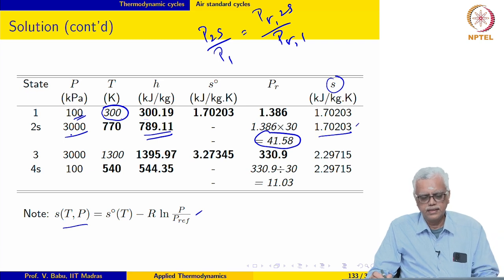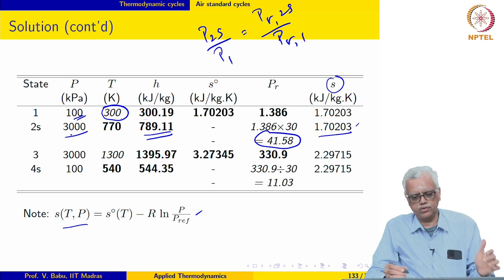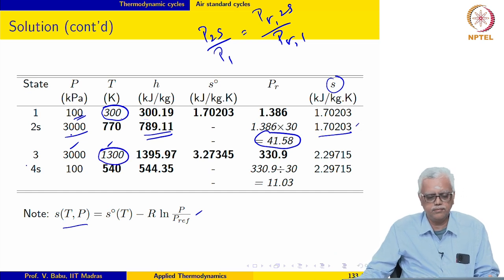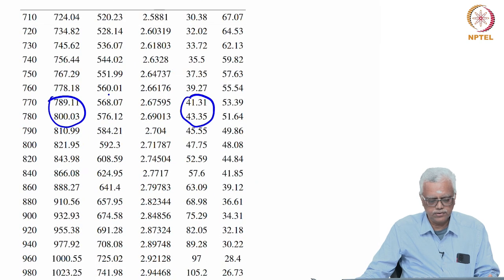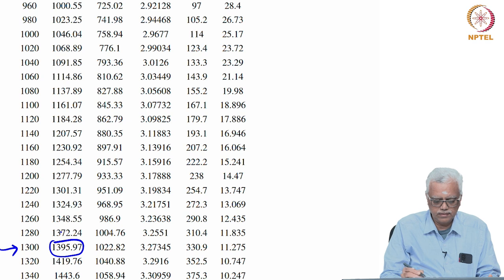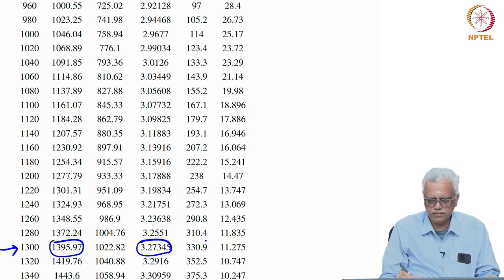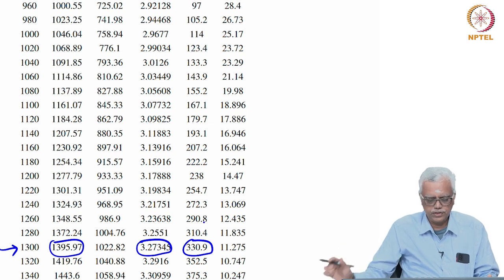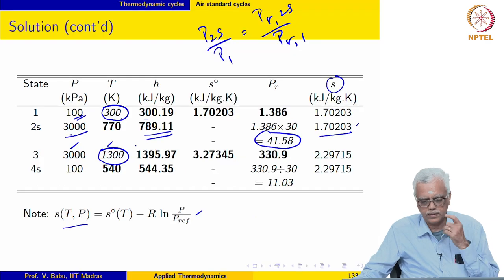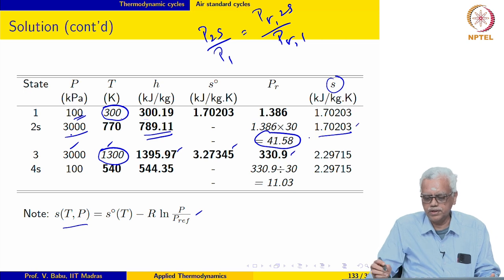We move on to state 3. Remember, 2s to 3 is an isobaric process, so the pressure is known and the temperature is given to be 1300 Kelvin. We use this value to enter the table and retrieve quantities from there. At 1300 Kelvin, we pick up the value for H, S0, and PR. H3, S0 at state 3, and PR at state 3 are all now known.